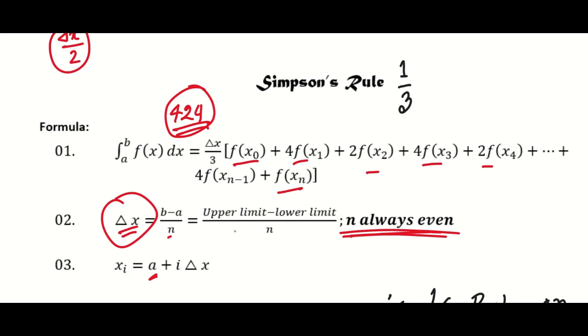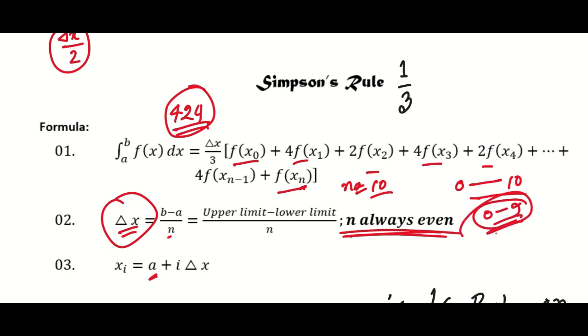So how many points do we have? We have n points. If n equals 10, then we have 10 intervals, giving us points from 0 to 10. We then find the values of x_i accordingly.